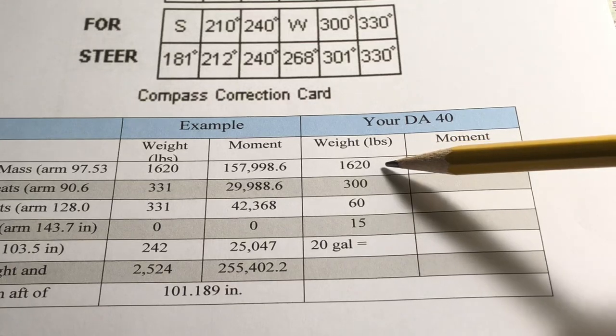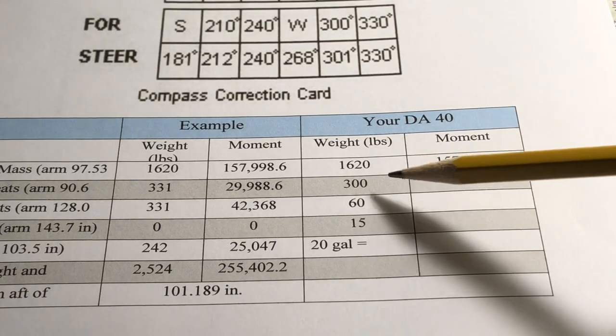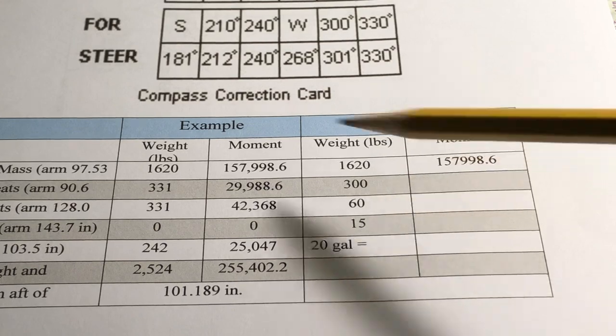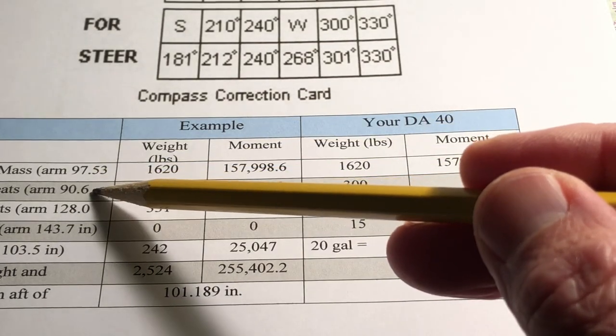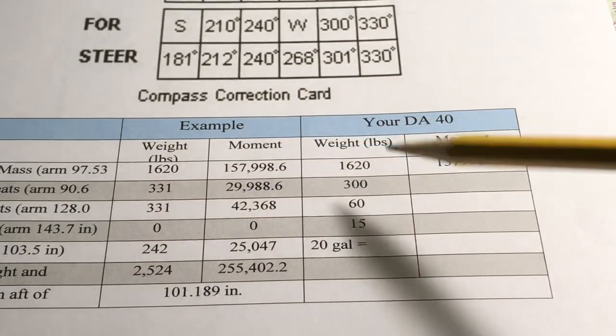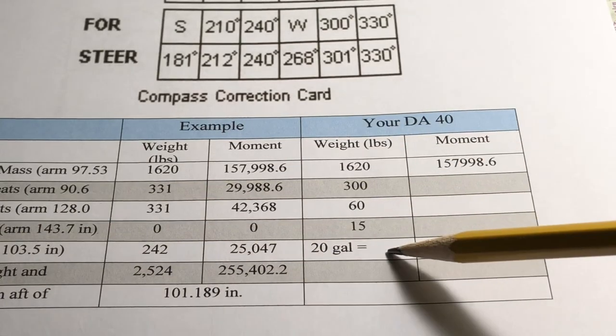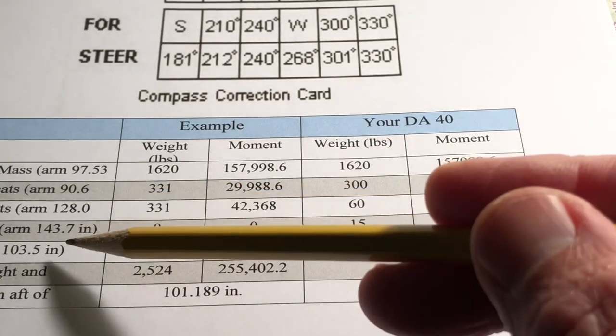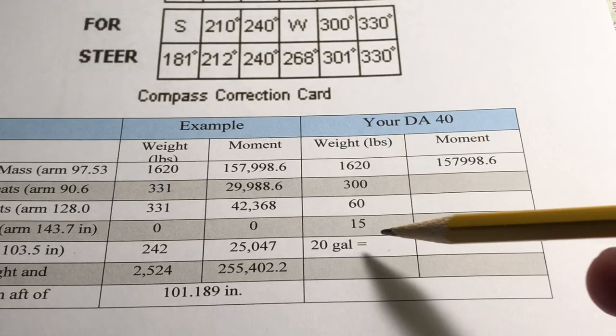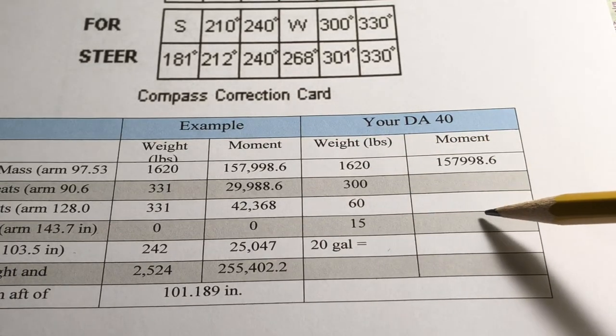The empty weight of the airplane and the empty moment, the weight of the front seat passengers along with the arm, the weight of the rear seat passengers along with the arm, baggage weight and the arm, number of gallons of fuel and the arm.